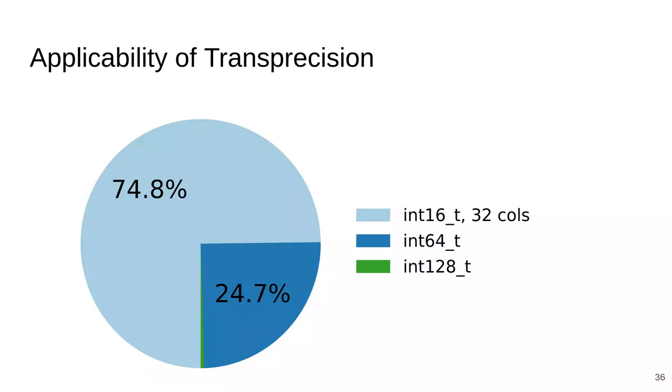Therefore, it is necessary to see empirically what fraction of the runtime is spent in test cases that can actually be run using short integers. Fortunately, we found that transprecision is actually quite applicable to this domain. In fact, ISL spends almost 75% of its runtime in test cases that FPL can run using only 16-bit integers and up to 32 columns in the matrix. Therefore, these test cases can be significantly accelerated by FPL using vectorization.